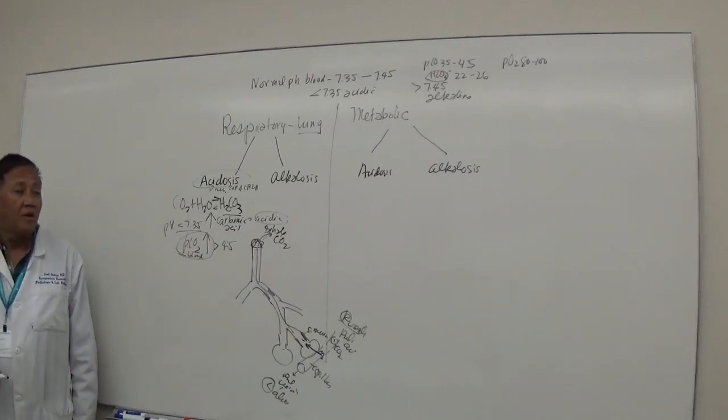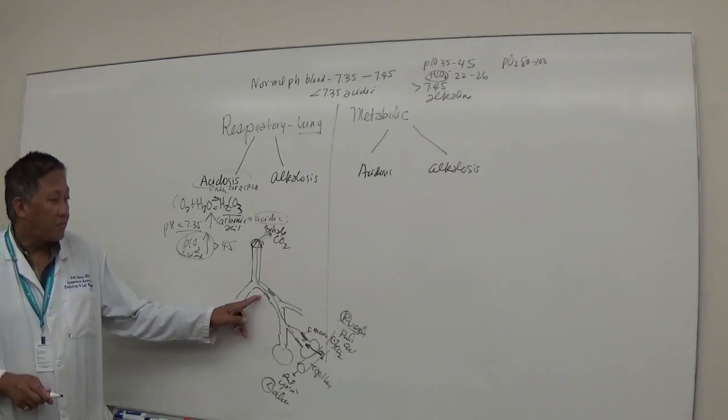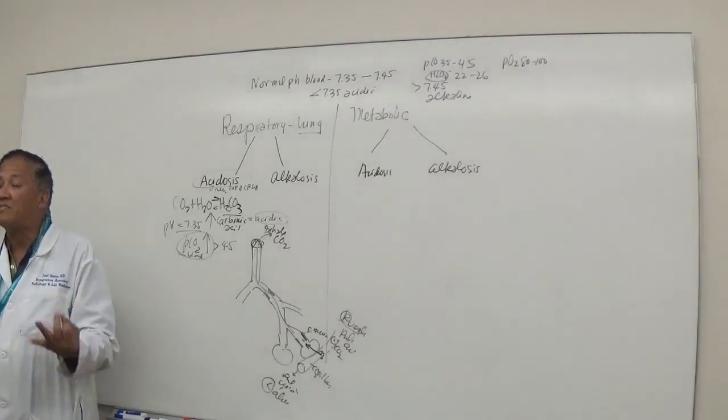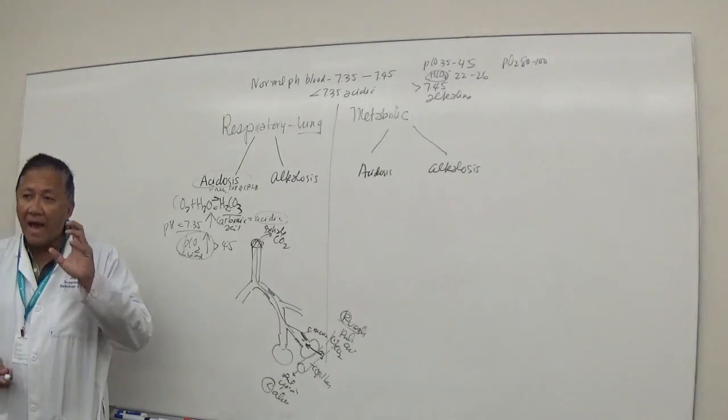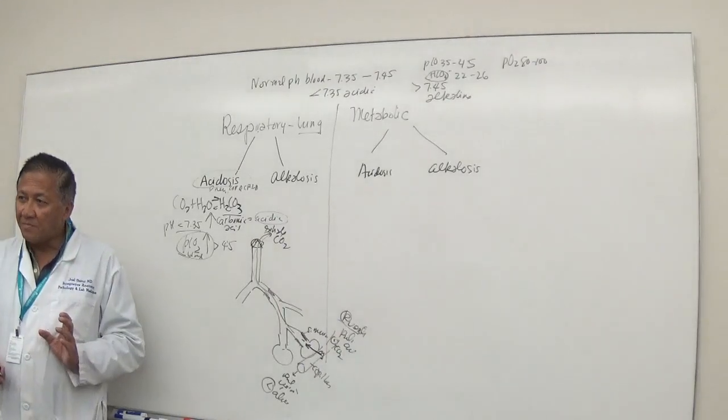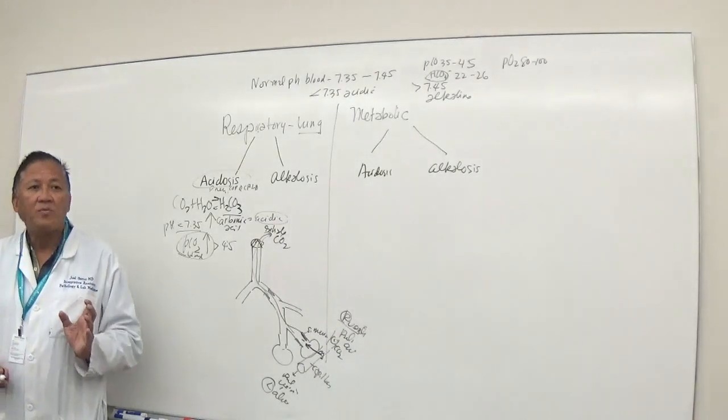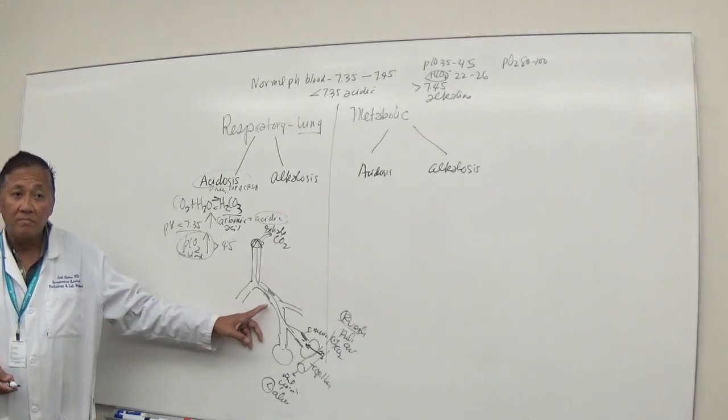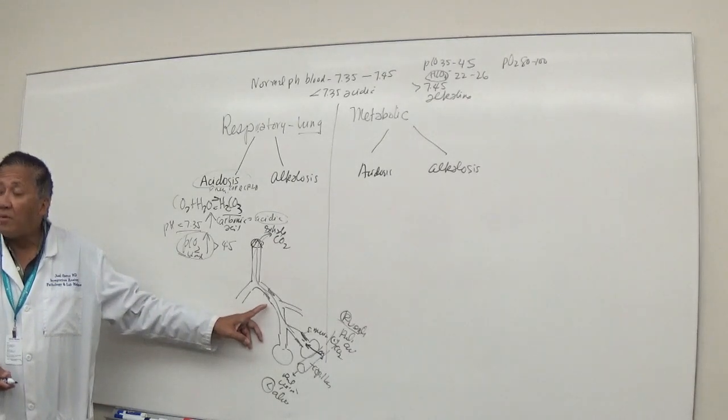What happens to the PCO2 level in respiratory acidosis patients? High or low? Greater than 45. Why did it go up? Because it was not able to go out. The secretions block the flow of carbon dioxide, causing it to go back to where it came from, which was the blood. So what will Dr. Gamma tell you to do? Nurse, I want you to suction the secretion.